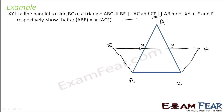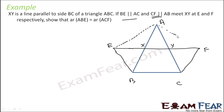XY needs to meet BE and CF at E and F respectively, so that area of triangle ABE is what we need to find. It is very easy.